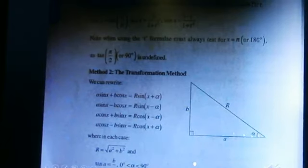So in this case, we can write the equations: a sine alpha plus b cosine alpha is equal to r sine of alpha plus alpha; a sine alpha minus b cosine alpha is equal to r sine of alpha minus alpha; a cosine alpha plus b sine alpha is equal to r cosine of alpha minus alpha; and a cosine alpha minus b sine alpha is equal to r cosine of alpha plus alpha.